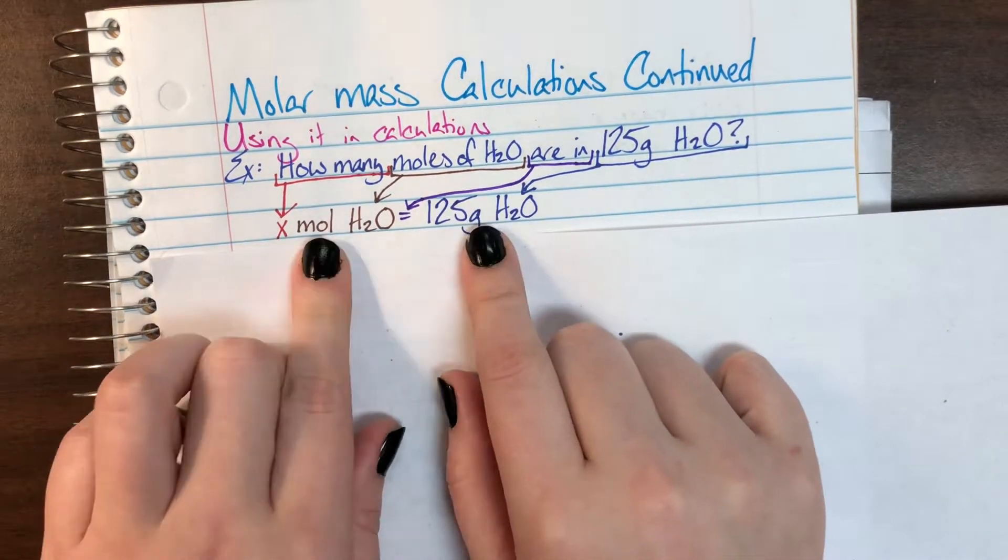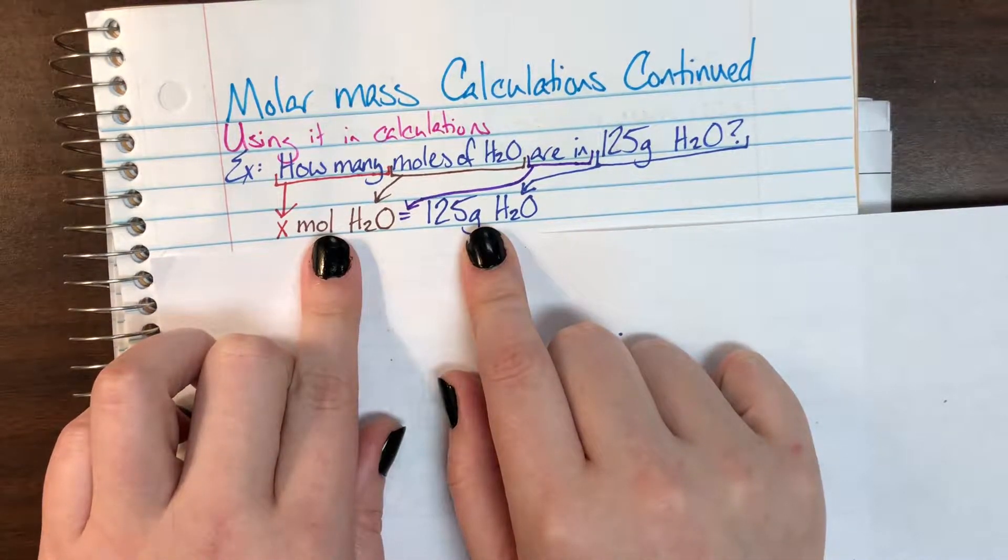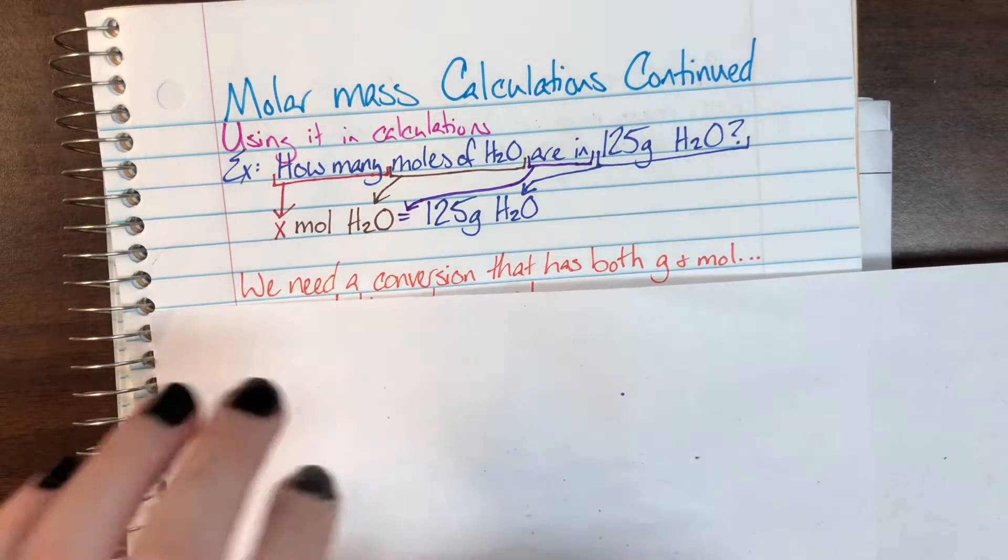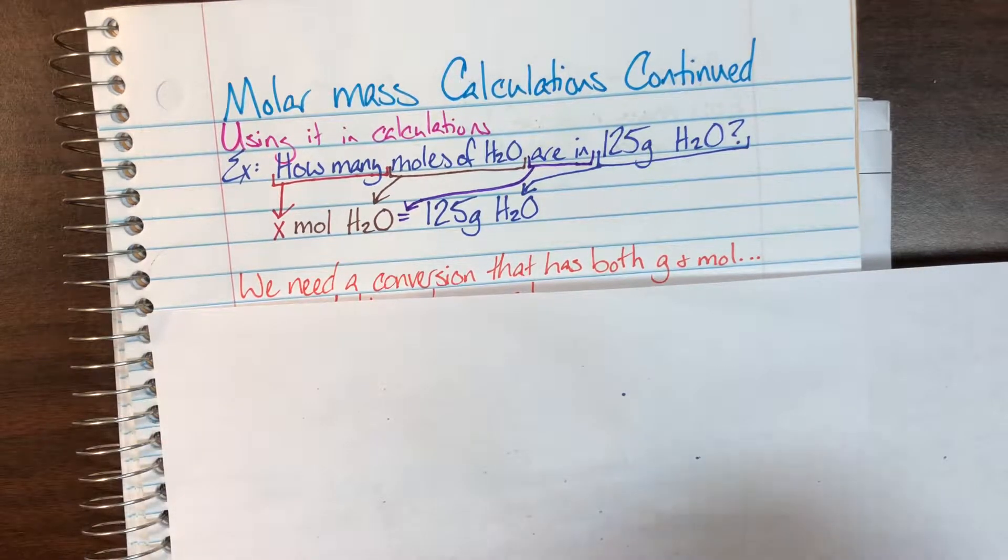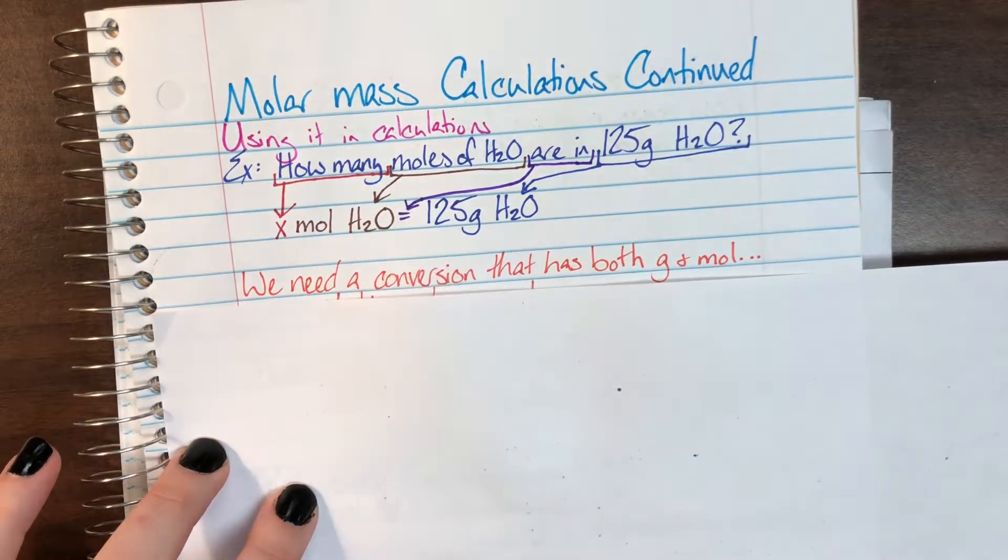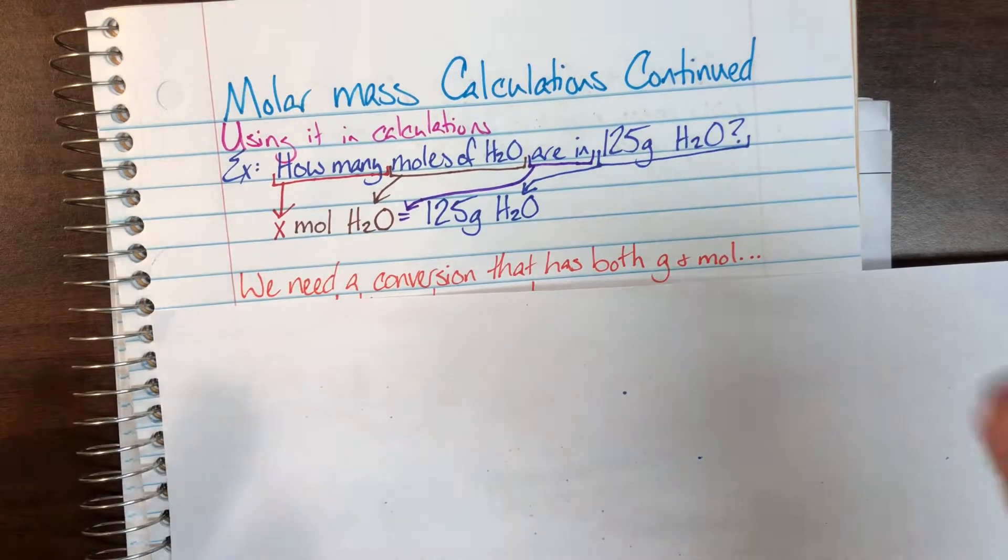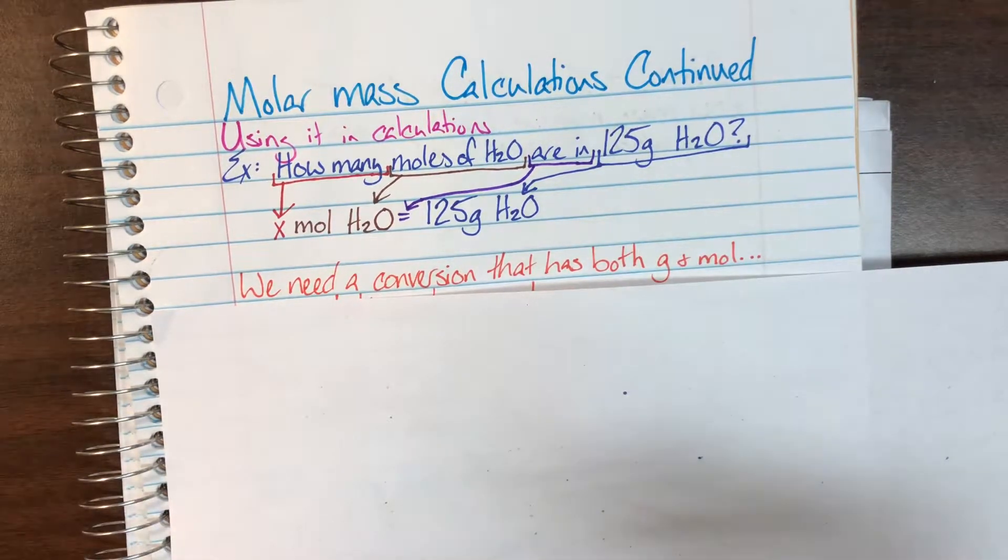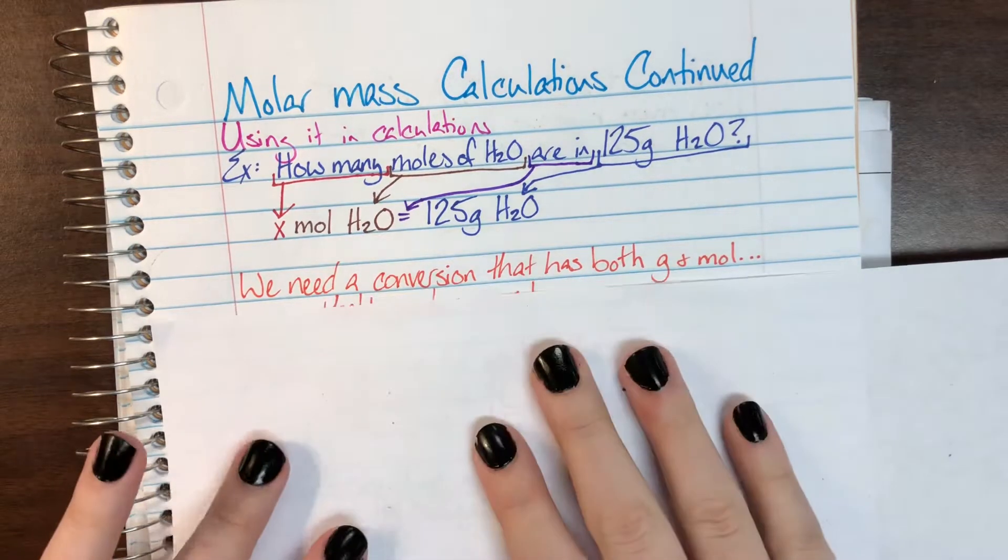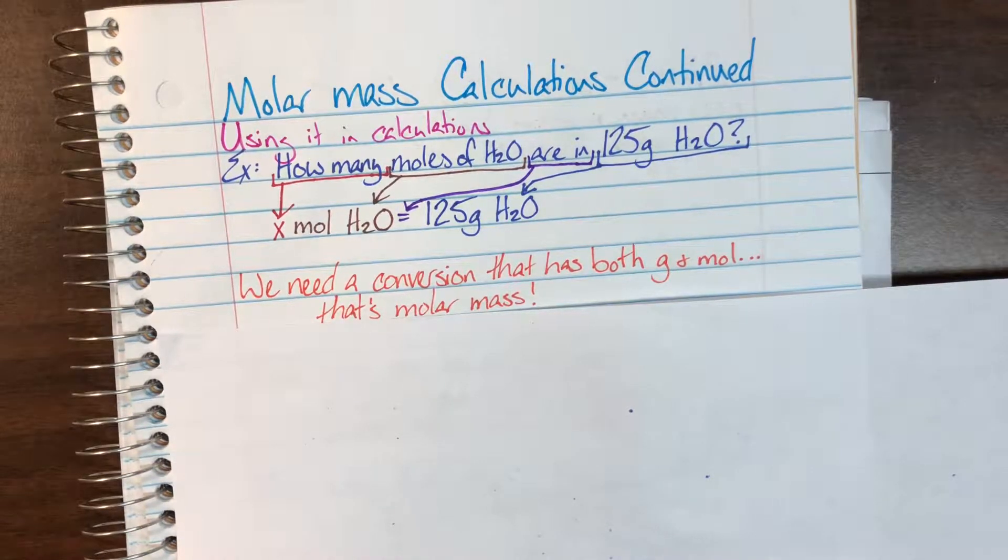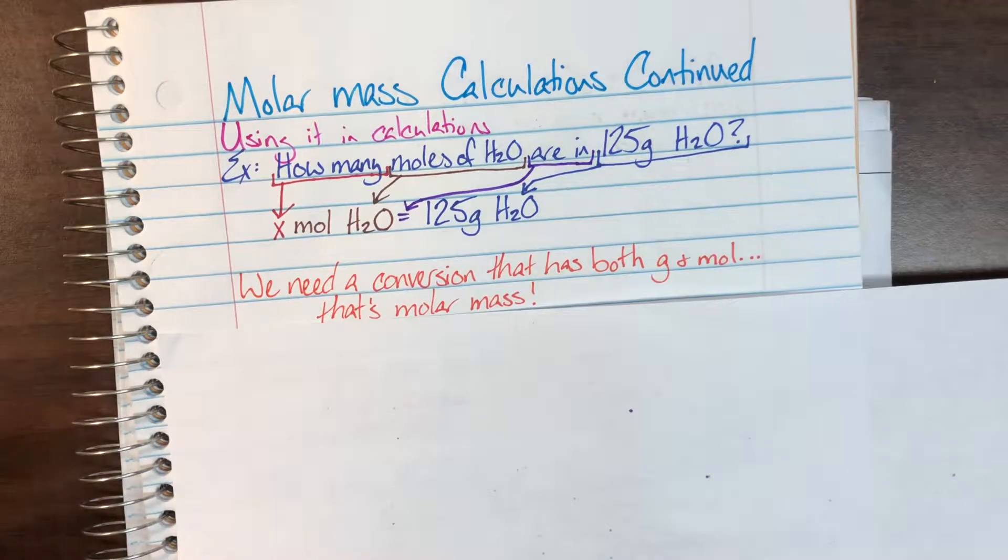So we need to get from grams to moles. We need a conversion that has both grams and moles in it. That will be our connection, our little bridge between the two values. So let's think, what thing did we just learn how to calculate that has both grams and moles? Oh, that's right. Molar mass. Molar mass has both grams and moles in it. And that is how we're going to get from one to the other.